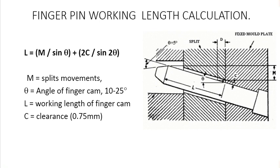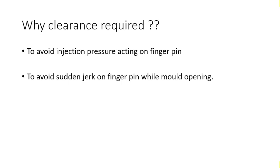Here is a formula to determine finger pin working length. M means split movement, which includes the projection or undercut length plus ejection clearance between the split and the part — this is essential to avoid any interruption. The angle of the finger cam will be between 10 to 25 degrees; here I'll consider 18 degrees as a mean value. L is the working length of the finger cam, and C means clearance given between the split insert and the finger pin. This clearance is very essential to avoid injection pressure acting on the finger pin during injection, which may cause breakage, and also to avoid sudden jerk acting on the finger pin during mold opening.